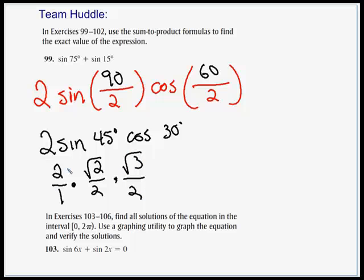We can multiply straight across. Two times root 3 times root 2 are two roots of 6 all over 4. And we could reduce this down to a half. So we're going to have root 6 over 2.